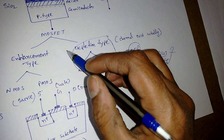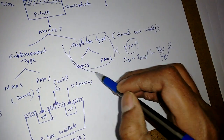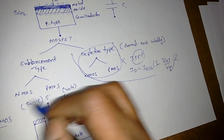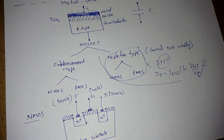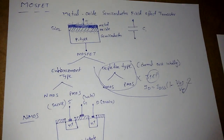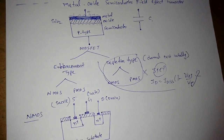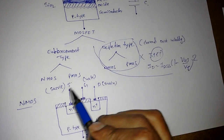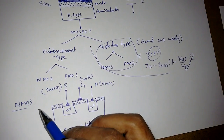In VLSI, we only use enhancement type MOSFETs nowadays. Within enhancement type, there is the N-channel MOSFET (NMOS) and the P-channel MOSFET (PMOS). We will first discuss NMOS.